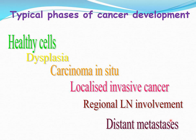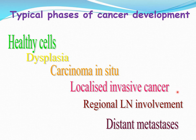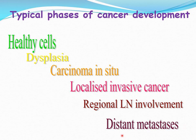Next comes distant metastasis. From the localized invasive cancer, cells spread through the blood to distant organs. For example, a localized carcinoma of the tongue with mandibular lymph node involvement may show multiple lesions in the lungs on diagnostic investigation — this is distant metastasis to the lung. The patient has gone into stage 4, that is distant metastasis.